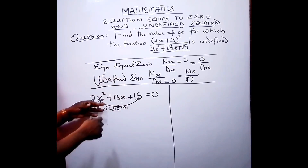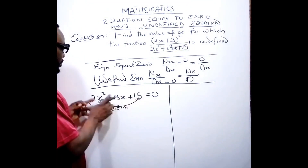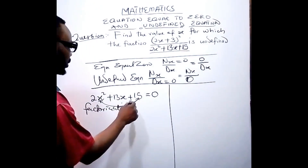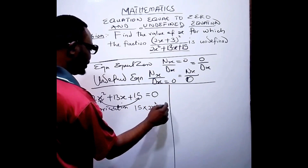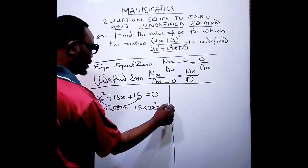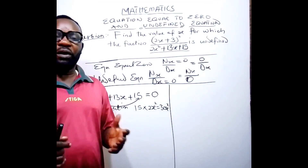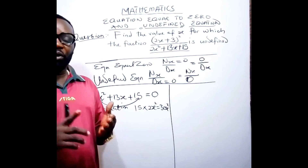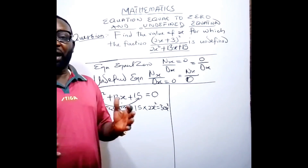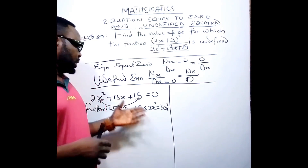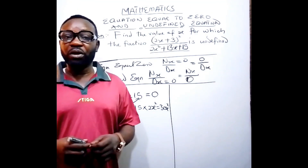In using the factorization method, the first thing I will do is multiply the constant value by the x² coefficient. So we are going to have 15 multiplied by 2x², which equals 30x². Now I will look for two values that when multiplied give 30x², and when added give 13x — the middle term.